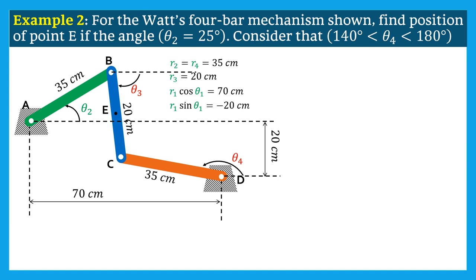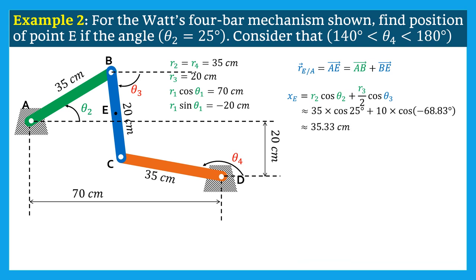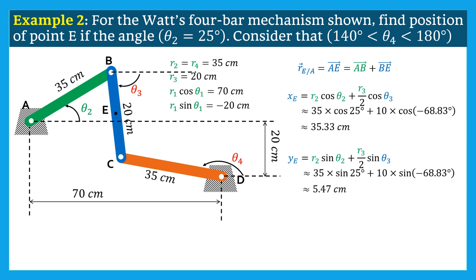To define the position of point E, we choose point A as a reference point. The position of E relative to A is given by vector AE = vector AB + vector BE. Thus the horizontal coordinate XE = R2·cos θ2 + (R3/2)·cos θ3. Substituting the numerical values gives XE = 35.33 cm. Likewise, the vertical coordinate YE = R2·sin θ2 + (R3/2)·sin θ3, giving YE = 5.47 cm. We need to recall that this Watt 4-bar mechanism is an approximate straight-line mechanism — point E moves approximately along the vertical line at midway between A and D.